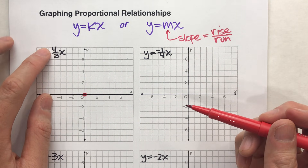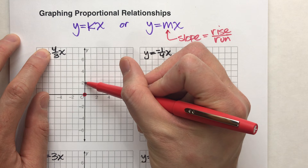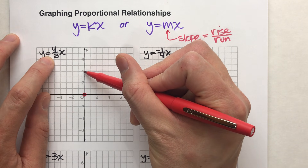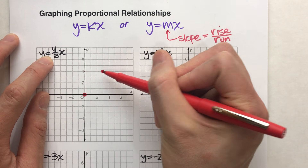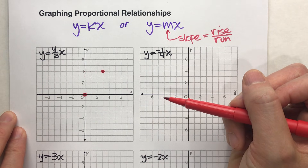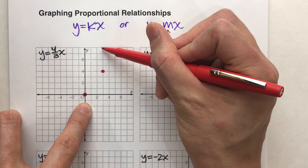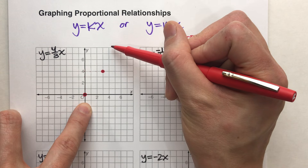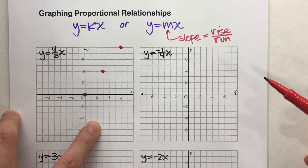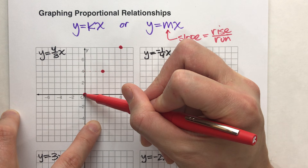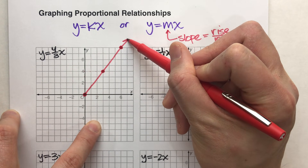My slope tells me from (0, 0) I can go up 4 and right 3, and I'll have another point on the line. Then I can repeat that again — up 4 and right 3 — and I've got another point on the line. So the line is going to look something like this.